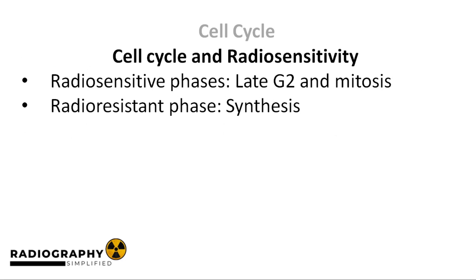Now let's track back to radiation biology. The reason we went over these steps of mitosis is because the cell possesses different degrees of radiosensitivity at different phases of mitosis. The cells are most radiosensitive during the late parts of gap two and during the proper mitotic phase when the cell is actively trying to divide. The cell is least sensitive during the synthesis phase, when the cell is not dividing but is instead preparing for mitosis.